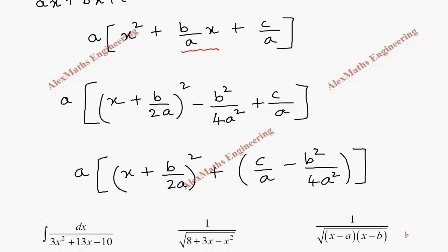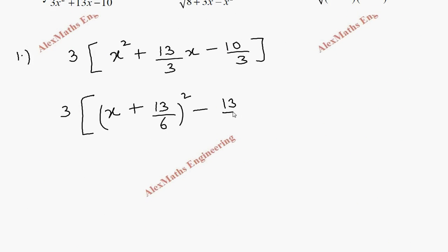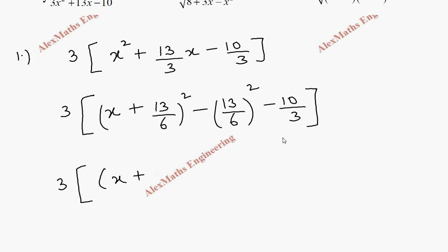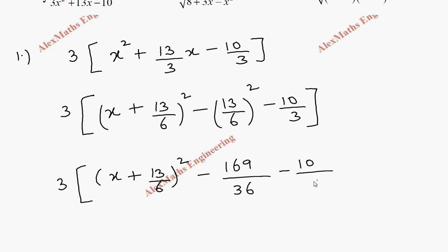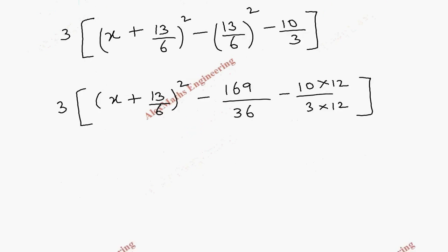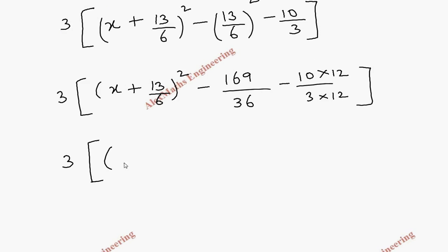We subtract (13/6)² and write the last term as it is: minus 10/3. Simplifying further, the first term is (x + 13/6)², then we have minus 169/36 minus 10/3. To make a common denominator, multiply numerator and denominator of the last term by 12, giving 3 times (x + 13/6)² with a common denominator of 36.